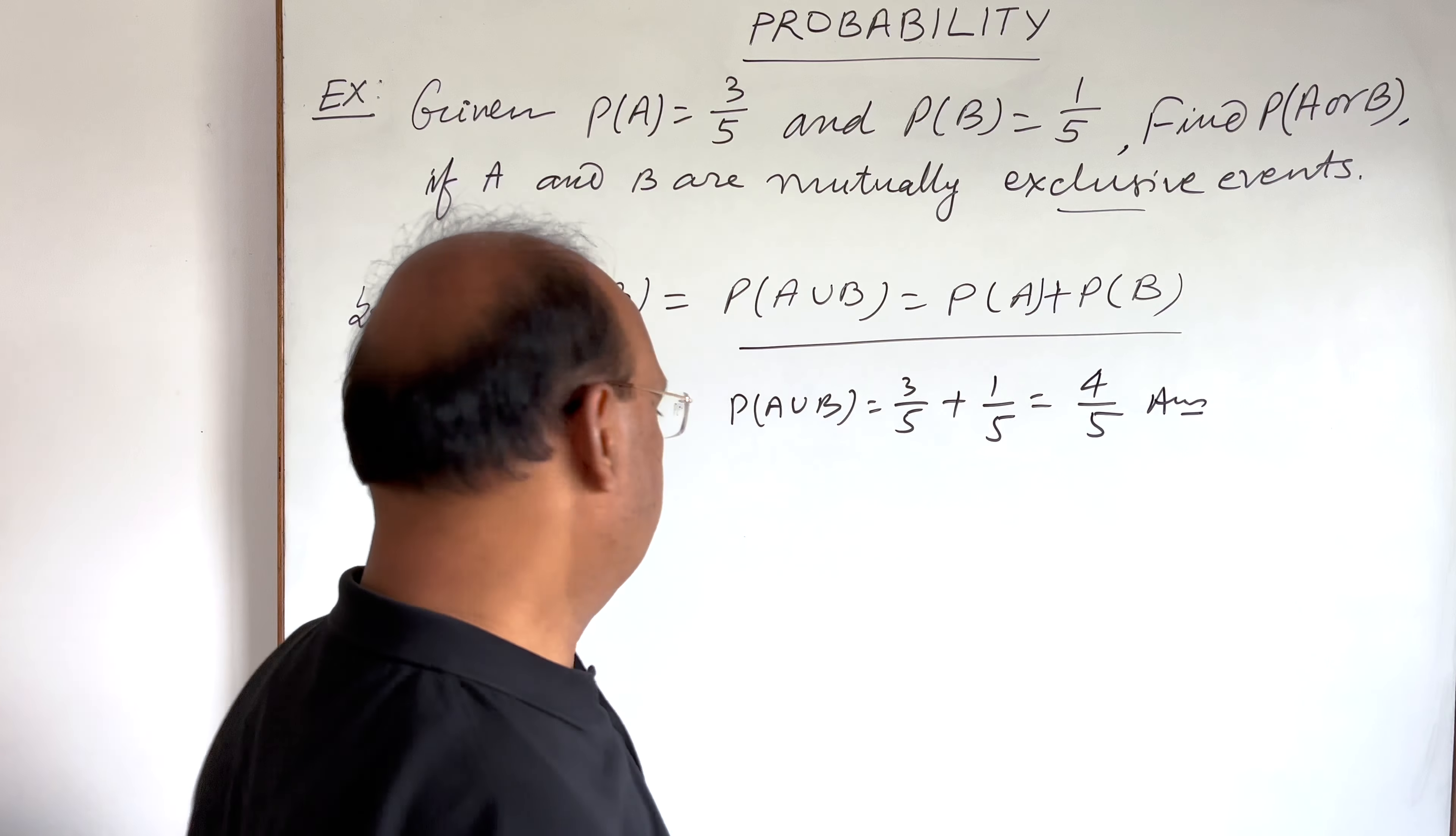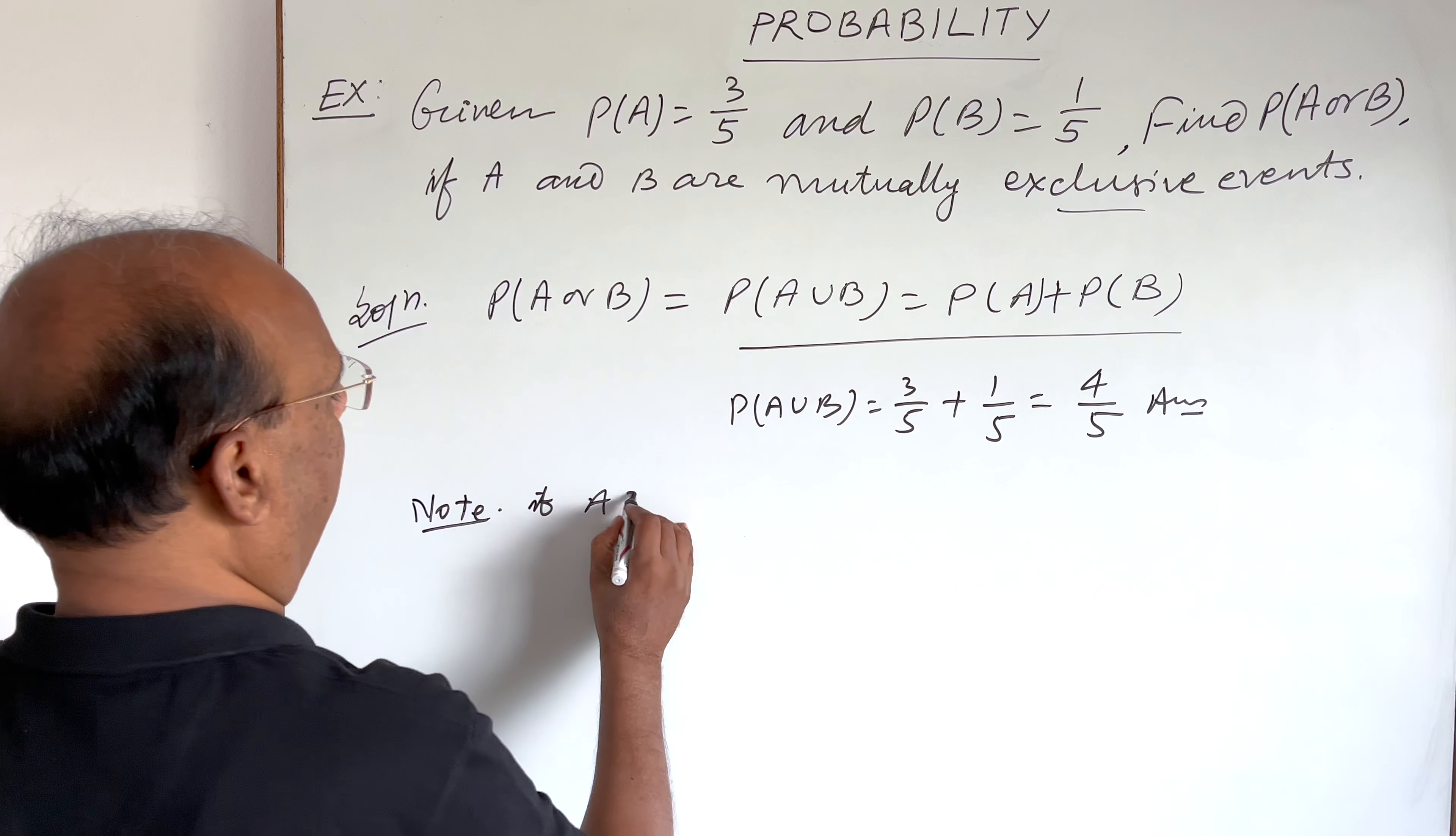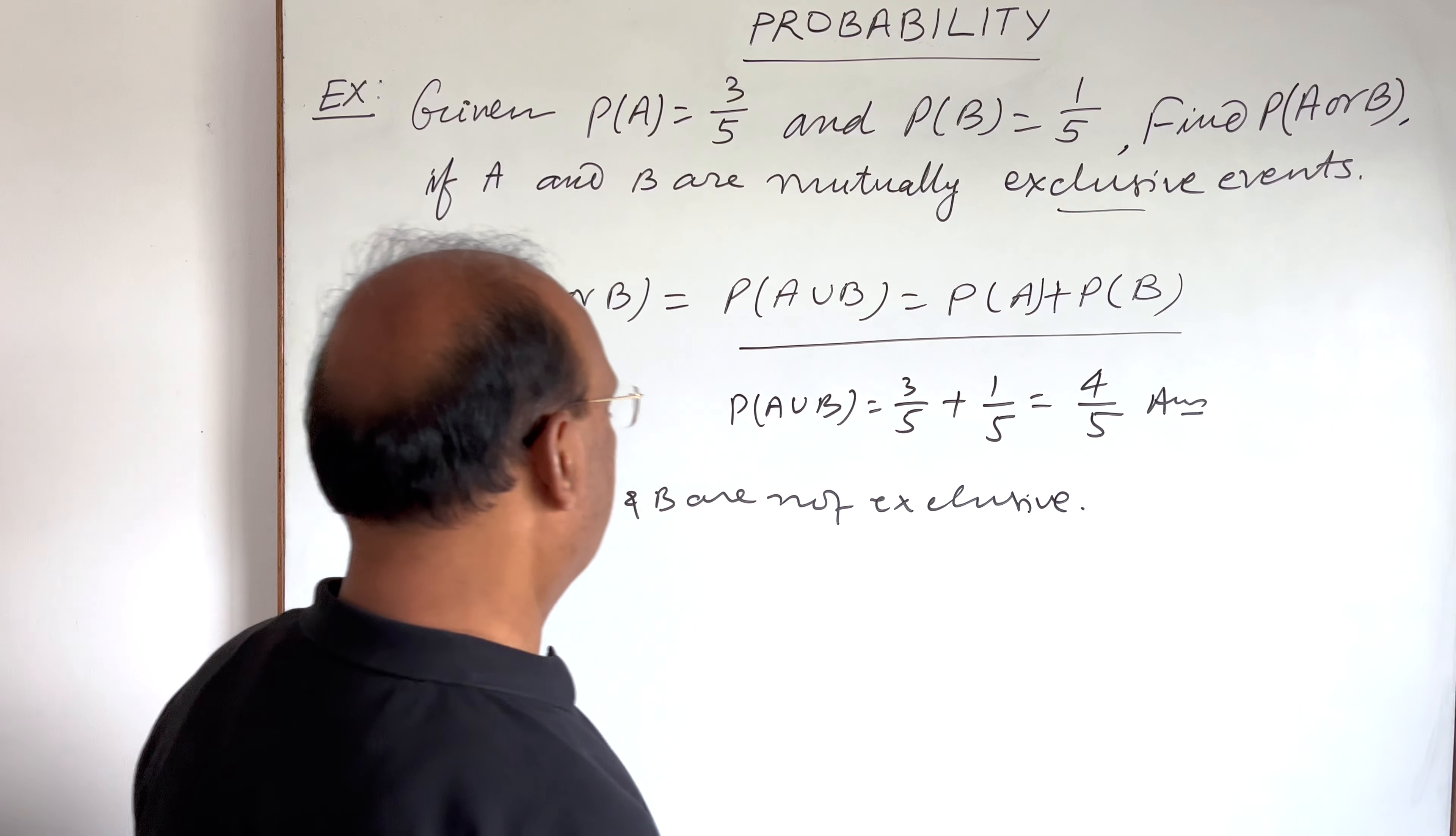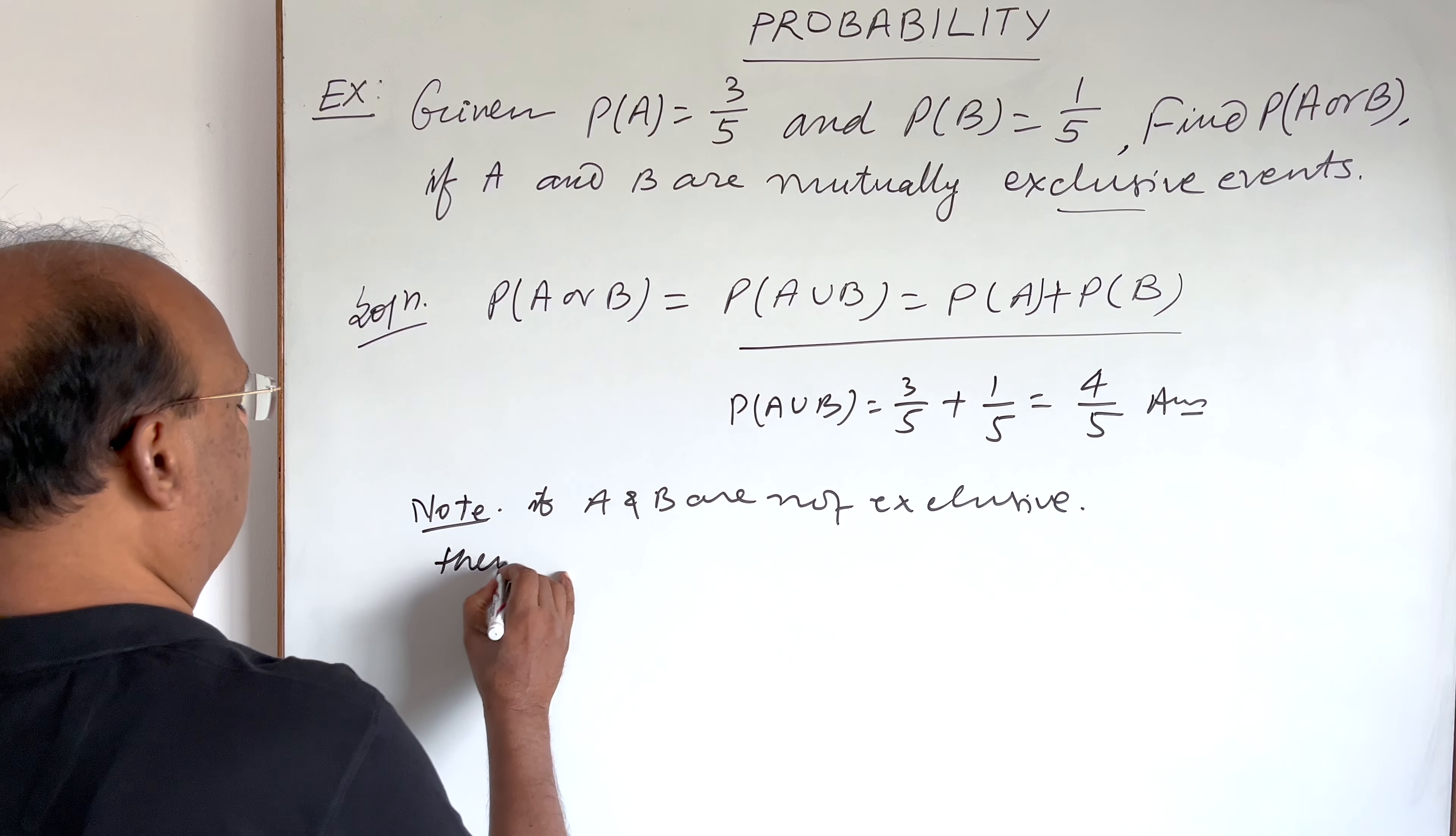Here I would like to give a note. So note it down: if A and B are not exclusive, here in this case, this is the case of exclusive, but if A and B are not exclusive, then in this case,